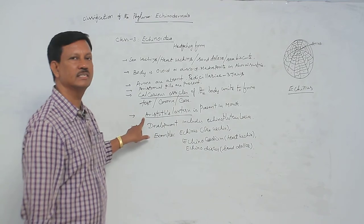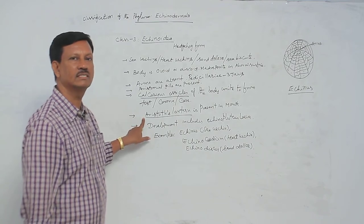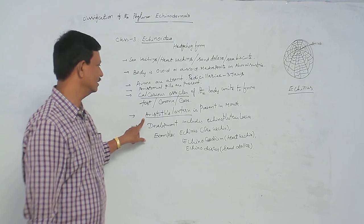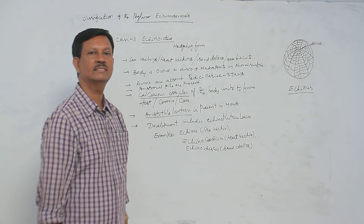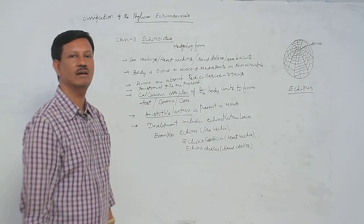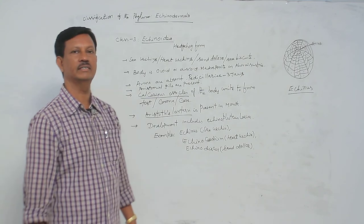Aristotle's lantern is present in the mouth, which is absent in other classes. Development includes the Echinopluteus larvae. These are the main characters of class Echinoidea.